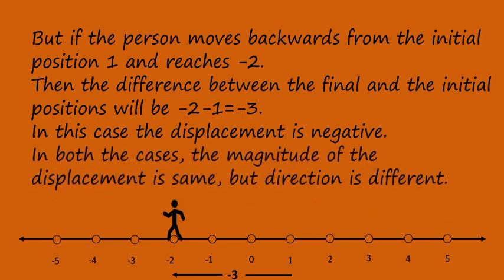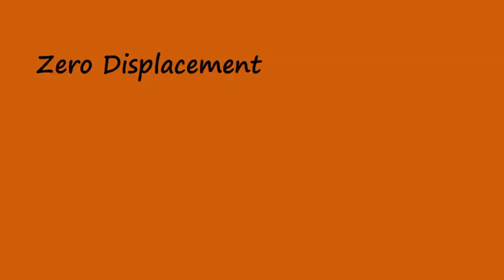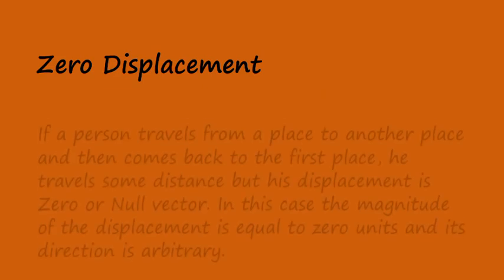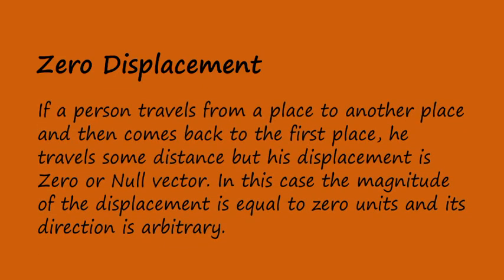In both cases, the magnitude of the displacement is the same, but the direction is different. Zero displacement. If a person travels from a place to another place and then comes back to the first place, he travels some distance but his displacement is 0, or a null vector. In this case, the magnitude of the displacement is equal to 0 units and its direction is arbitrary.